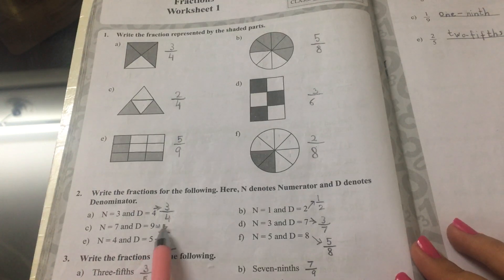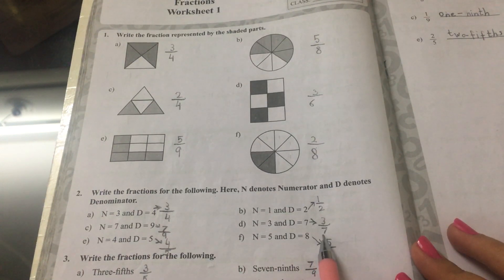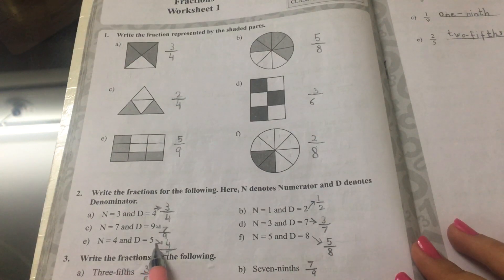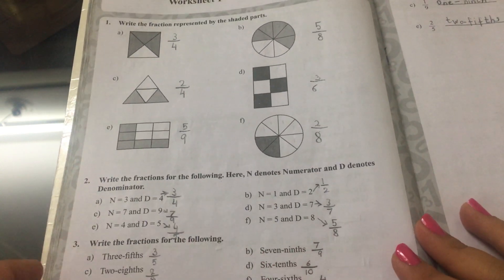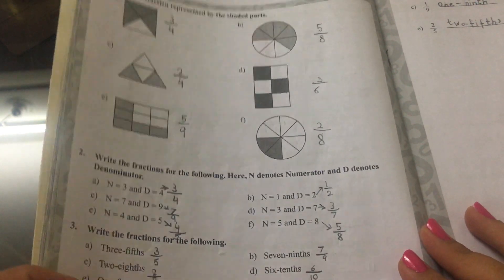C is equal to 7 ninths, D is equal to 3 sevenths, E is equal to 4 fifths, and F is equal to 5 eighths.